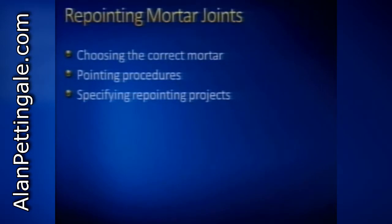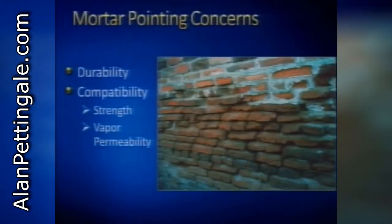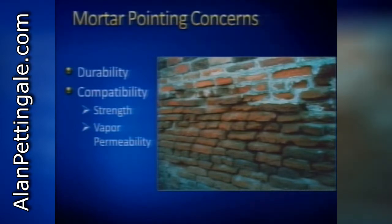Let's talk about different crack repair methods. We're going to start with repointing mortar joints — Al is going to talk more about this in a moment. I'll tell you what I think, then he'll tell you the reality. Choosing the correct mortar, pointing procedures, specifying projects. When we're looking at historic preservation projects, there are a couple of very important philosophical approaches: one is minimizing the intervention — we never want to do something to a historic building that isn't absolutely necessary — and another is compatibility of materials. I can't tell you how many repointing projects over the years have been absolutely ruinous to a building because the wrong mortar was chosen.